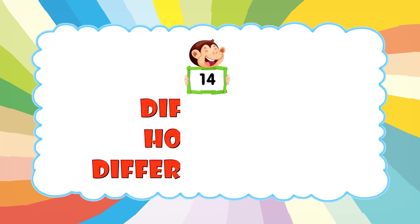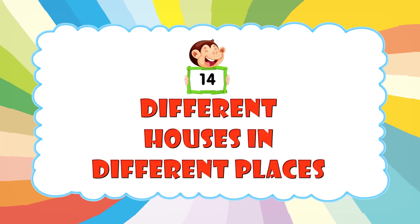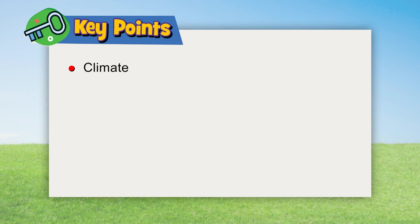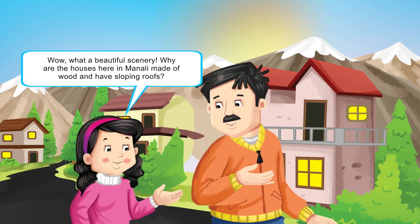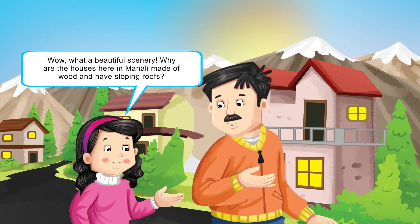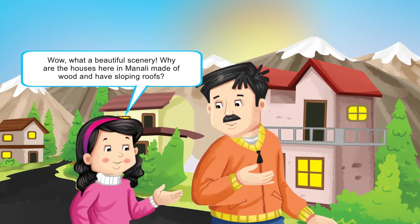Chapter 14: Different Houses in Different Places. Key points: climate, availability of material, and budget. Special houses. Wow, what a beautiful scenery! Why are the houses here in Manali made of wood and have sloping roofs?